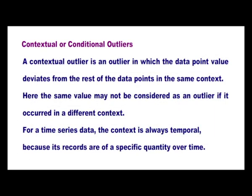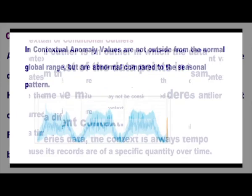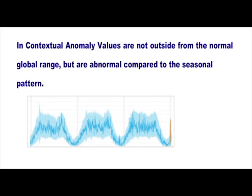Next we will see the contextual or conditional outliers. A contextual outlier is one in which the data point value deviates from the rest of the data points in the same context. The same value may not be considered as an outlier if it occurred in a different context. For time series data, the context is always temporal because its records are of a specific quantity over time. Contextual anomaly values are not outside the normal global range but are abnormal compared to the seasonal pattern.